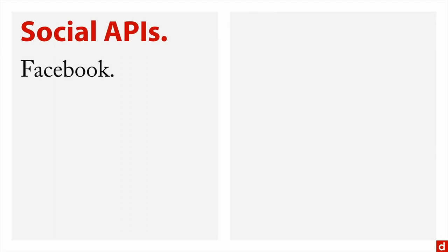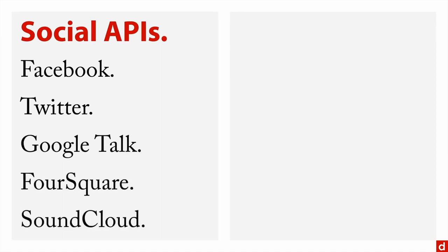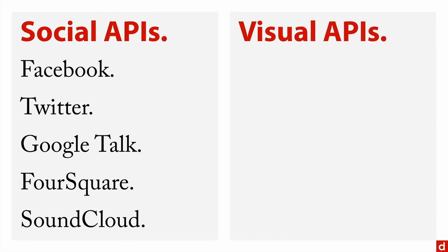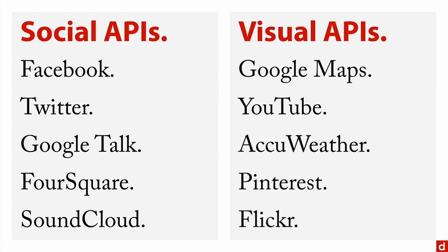There are a few kinds of APIs that are really common. First are social APIs — ways of interfacing with social networks like Facebook, Twitter, Google Talk, Foursquare, and SoundCloud. Then there are visual APIs for getting visual data, such as Google Maps, YouTube, AccuWeather for weather information, Pinterest, and Flickr. You can program your computer to pull in data from any of these services and integrate it into your own website or data analysis.